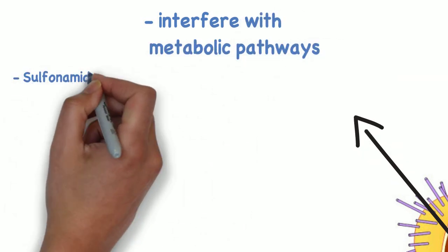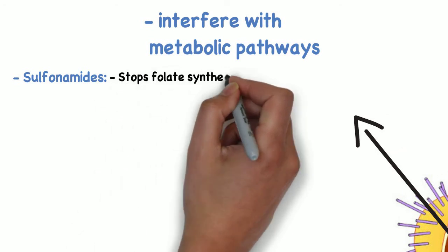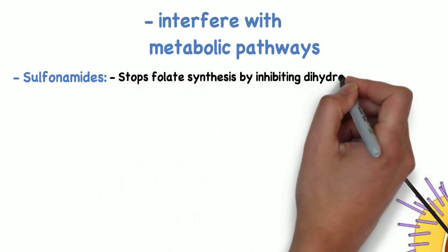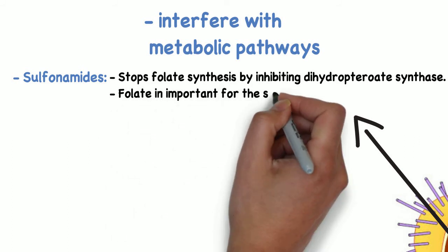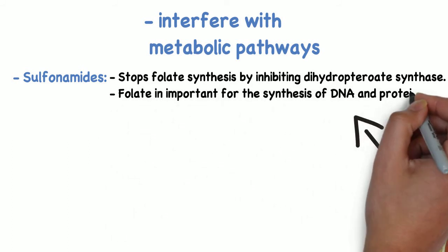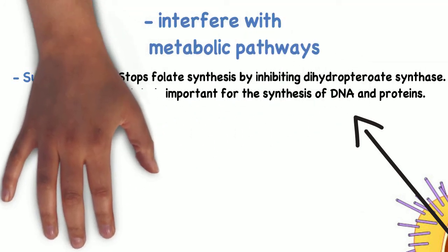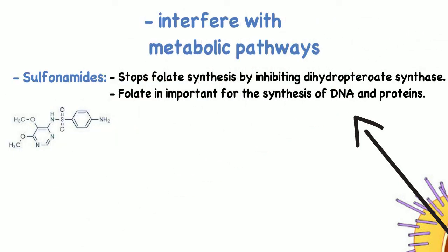Now let's talk about antibiotics that interfere with metabolic pathways. Let's talk about sulfonamides, which stop folate synthesis by inhibiting dihydropteroate synthase. Folate is an important part of DNA synthesis and protein synthesis. Sulfonamides have the same mode of action as dapsone.